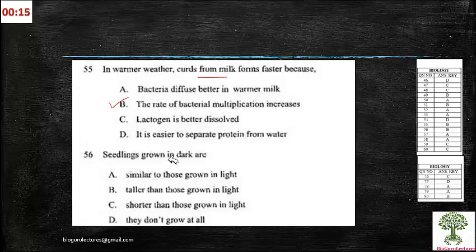And next is seedlings grown in dark are. According to the key here it's B. I don't think it is a correct option here. It should always go with they do not grow at all, because light is an essential factor for the seedlings to grow. At any case this key is not relevant according to the conditions required for the seedlings' growth.